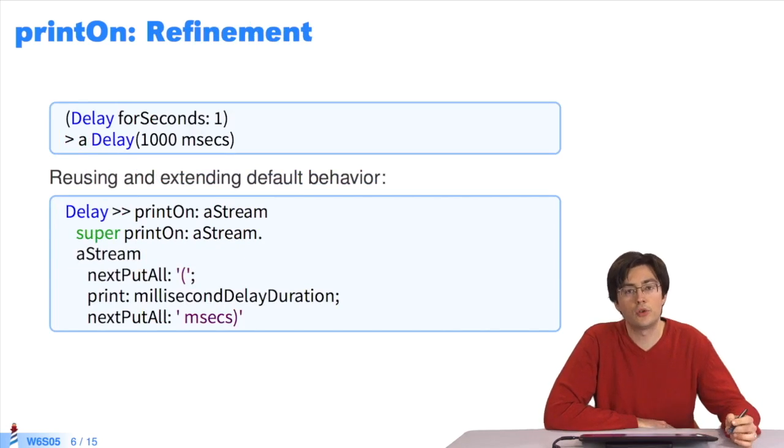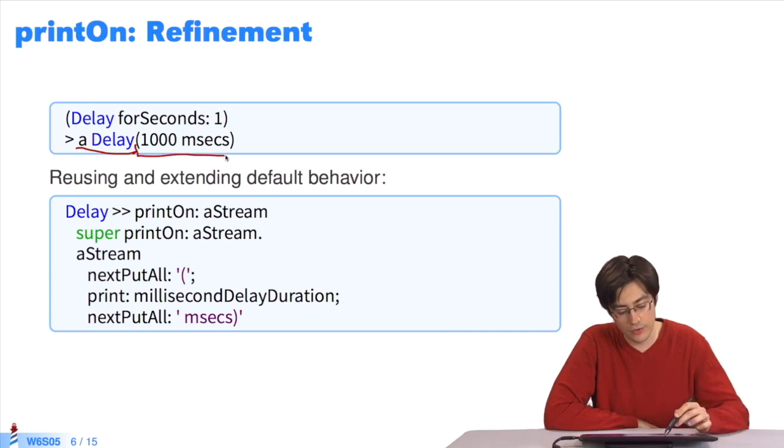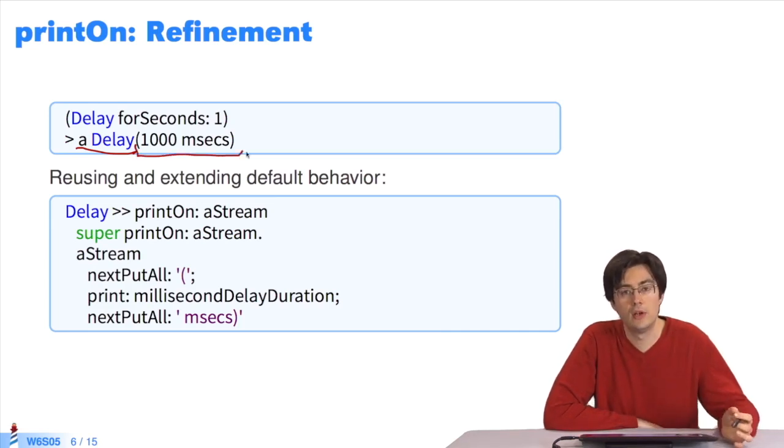But it is possible to change this default behavior by refining printOn. For a delay, we see that the printString of a delay starts with the default printOn return, that is a delay. But afterwards, we can add the delay in milliseconds in parentheses.